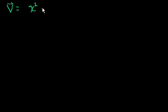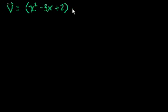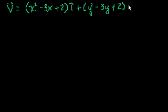Now let's do a slightly fancier example, and then we'll try to analyze the vector field. Hopefully this will make everything a little bit more tangible. Let's say that the velocity of the fluid or the particles in the fluid at any given point in the xy plane is x squared minus 3x plus 2 in the x direction, plus y squared minus 3y plus 2 in the y direction. Let's make it simple so that we only have one thing to factor.